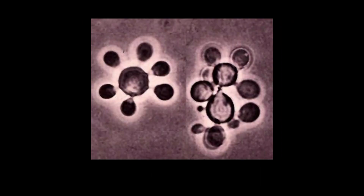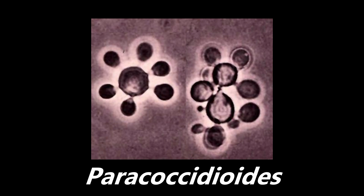Moving on — this is another high-yield structure. Nothing really looks like this. You can appreciate this kind of looks like a circular structure, maybe a Ferris wheel — or as one might say, a captain's wheel. This is an example of Paracoccidioides. What we're looking at are multiple budding yeasts off of the main one, giving it that captain's wheel appearance. One high-yield point: Paracoccidioides is larger than red blood cells, so on a peripheral smear they will be much smaller by comparison.